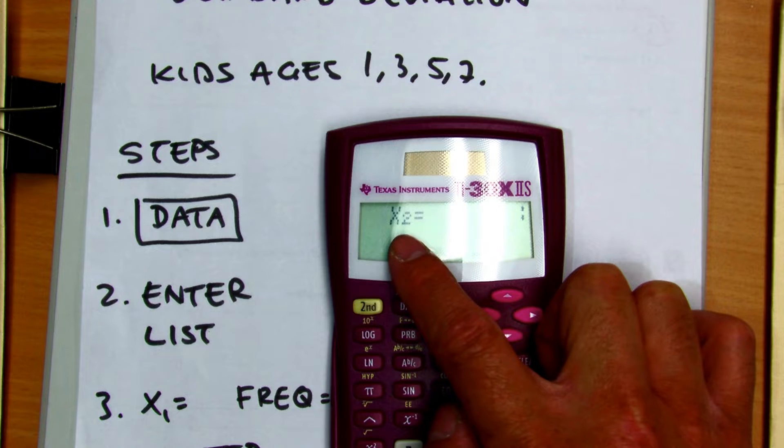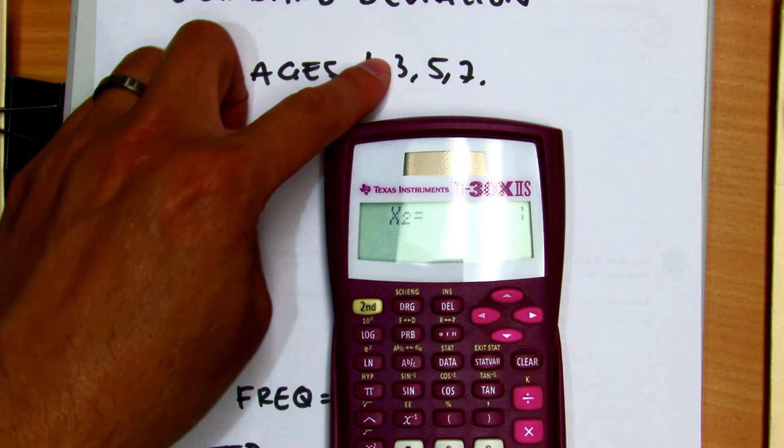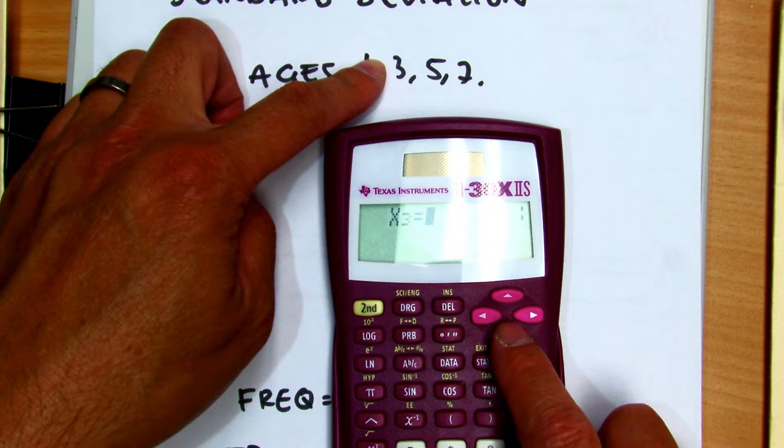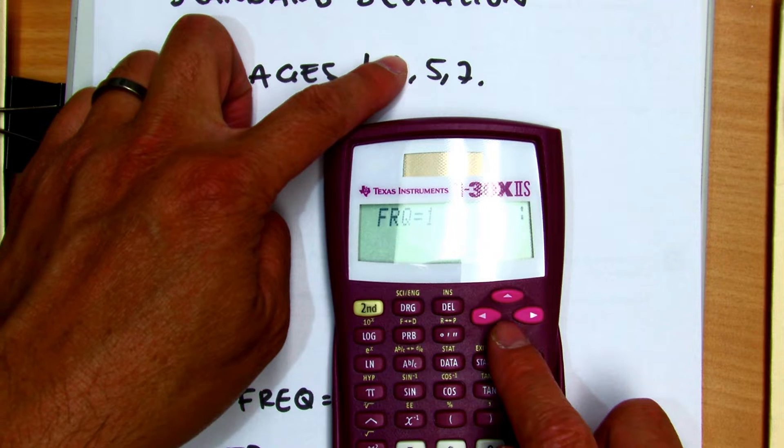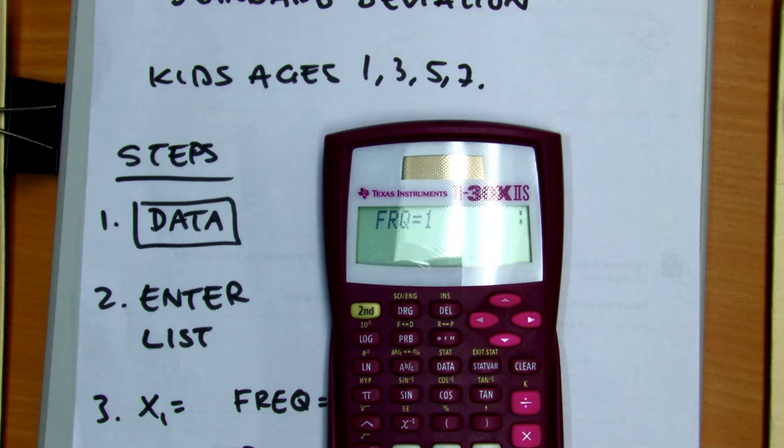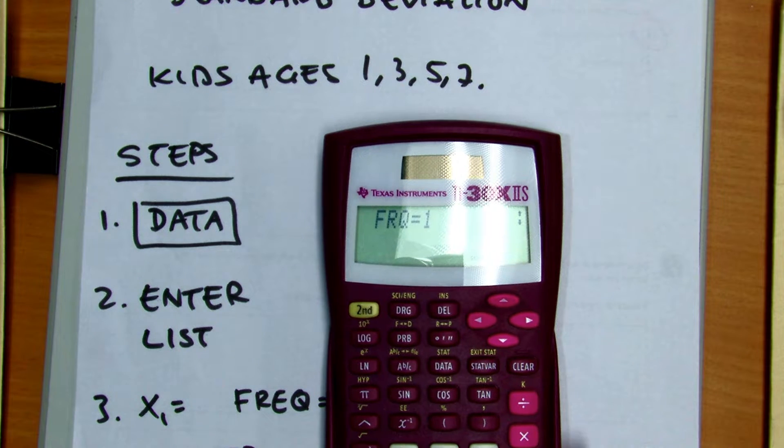and you'll get X2, or the second number in the list. And then you're going to go ahead and put in all of the numbers in the list.